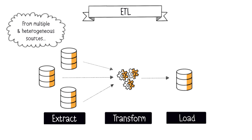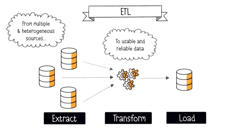Next is the T for Transform. This means cleaning and standardizing the data, defining a common format and storage mode for all, removing duplicates, anomalies, and unusable data. The goal at this stage is to convert the data into a usable format.